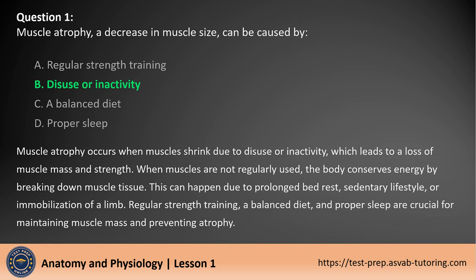When muscles are not regularly used, the body conserves energy by breaking down muscle tissue. This can happen due to prolonged bed rest, sedentary lifestyle, or immobilization of a limb. Regular strength training, a balanced diet, and proper sleep are crucial for maintaining muscle mass and preventing atrophy.